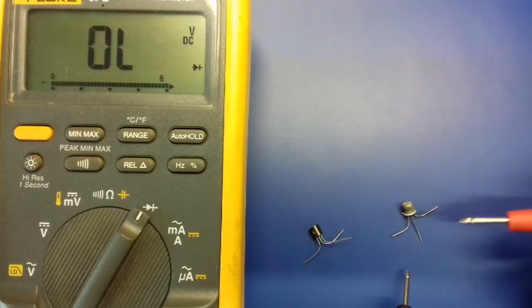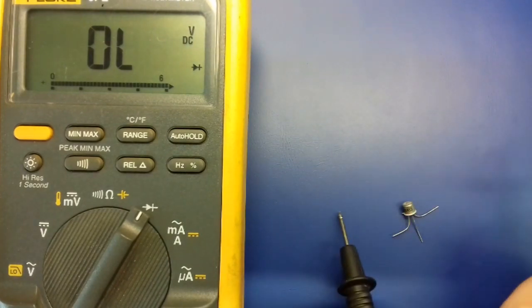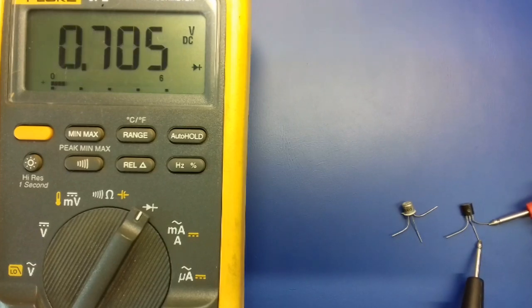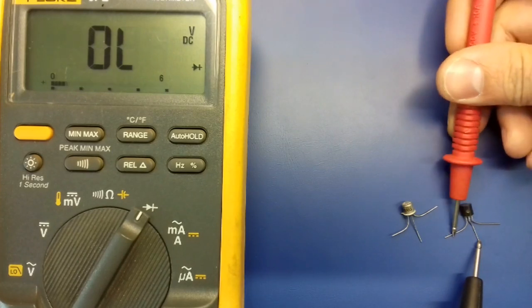Testing the transistor this way will reveal short-circuited or broken junctions. If everything measures within the limits it means the transistor is ok and will most likely behave normally in any circuit.